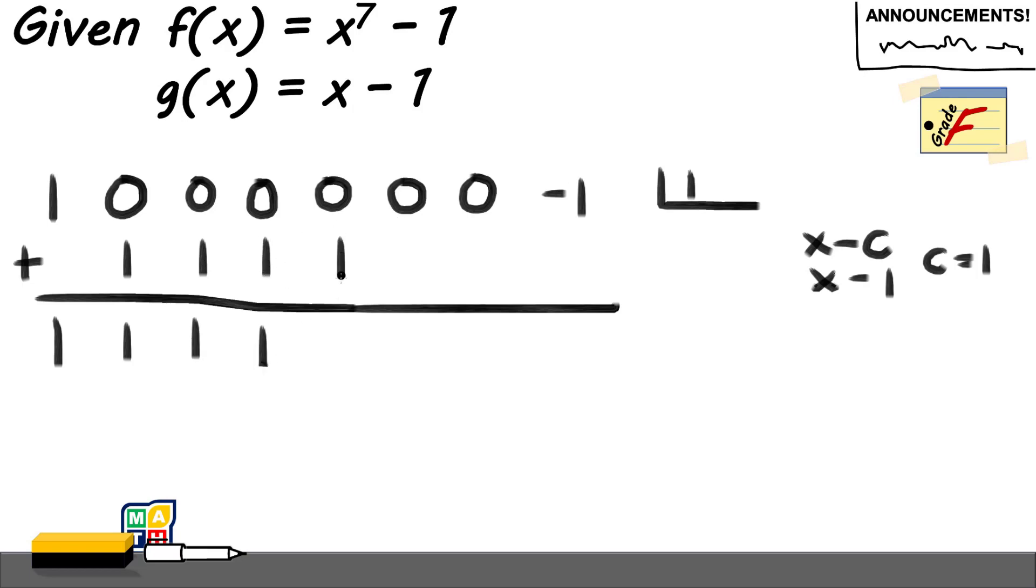Of course, 1 times 1 is 1. 0 plus 1 is 1. 1 times 1 is another 1. 0 plus 1 is 1. 1 times 1 is 1. 0 plus 1 is 1.